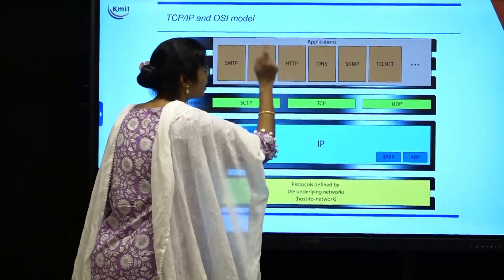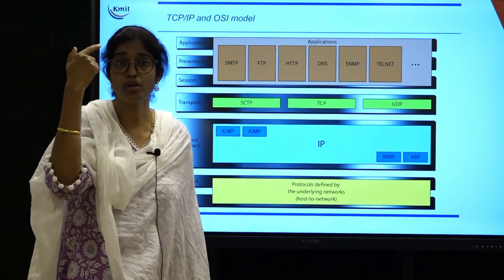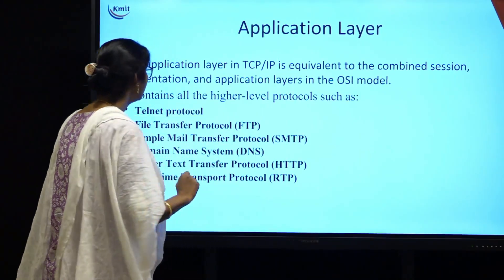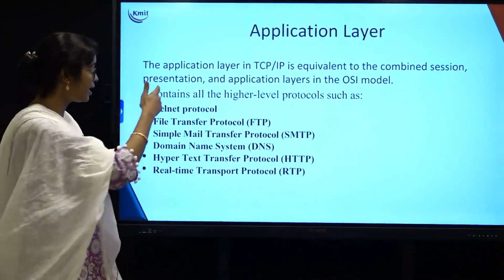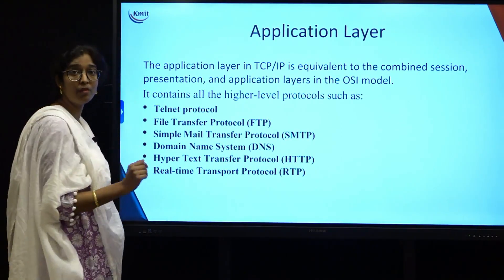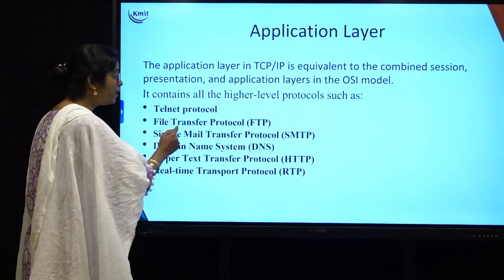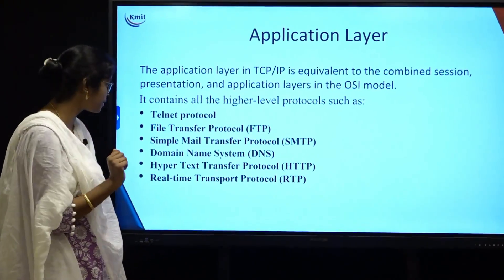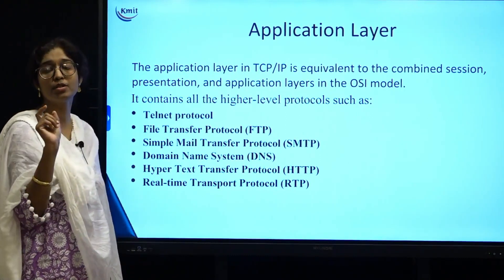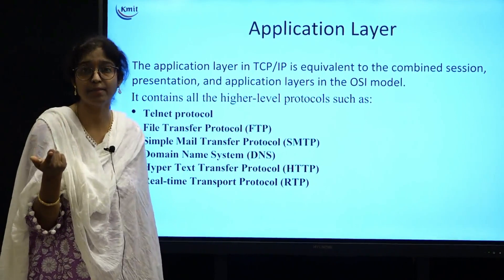Now let us look at the application layer. The session and presentation roles in the TCP/IP model are very limited, so they are combined into a single application layer. The application layer has a direct connection to the user and provides a user interface. It contains all high-level protocols: Telnet for virtual telecommunication, FTP for large file transfers, SMTP for mail services, DNS for mapping host names to network addresses, HTTP for fetching web pages on the internet, and RTP for transmitting real-time data like audio, video, and movies.